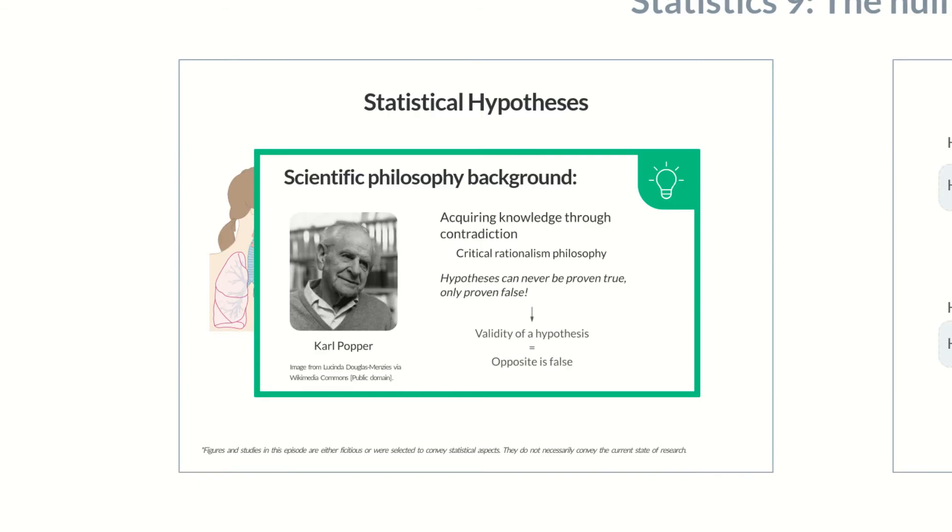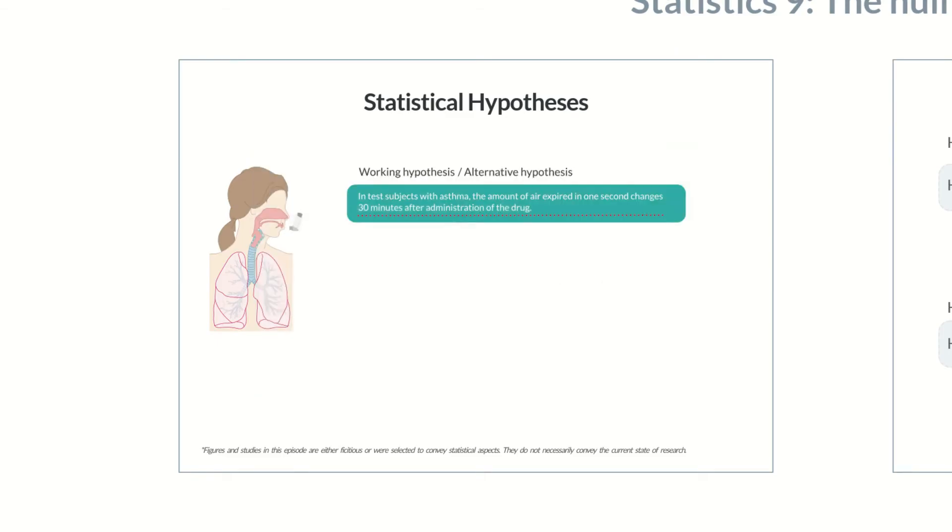In this theory, the validity of a hypothesis is demonstrated by showing its opposite is false. So instead of the alternative hypothesis, the null hypothesis is tested in statistics.